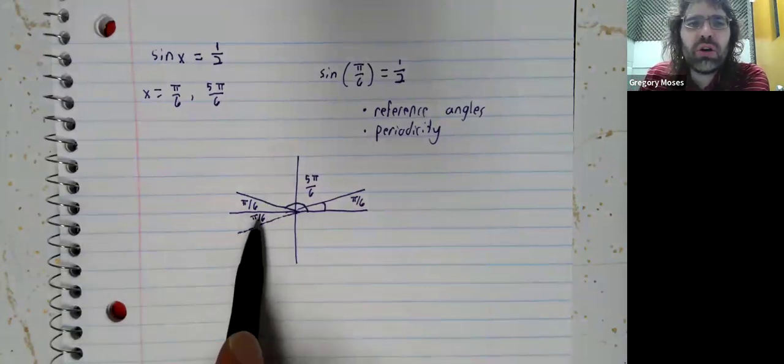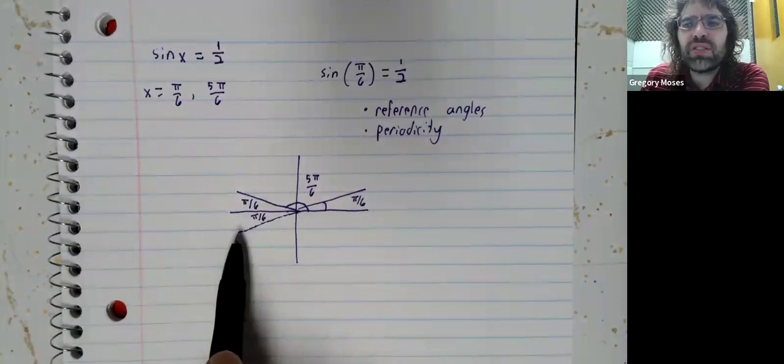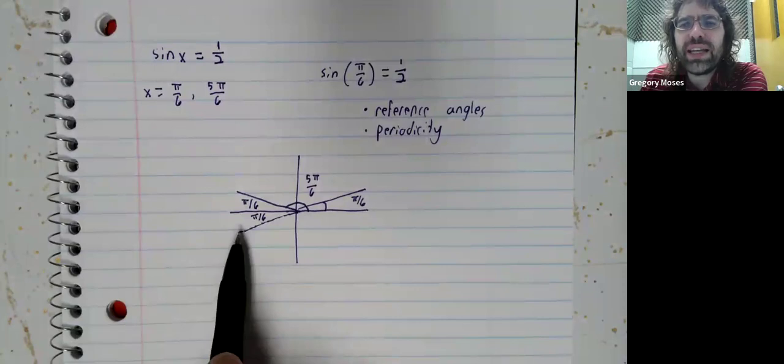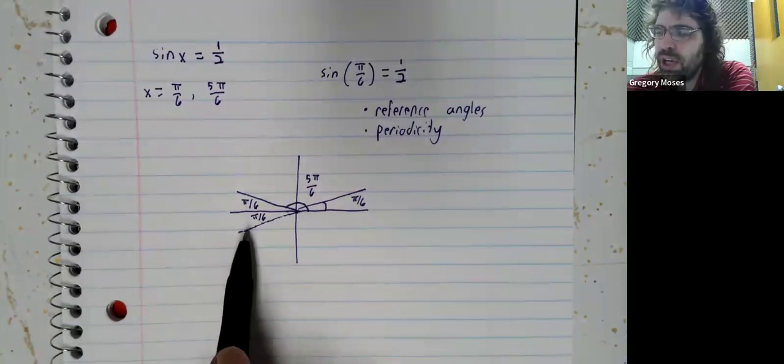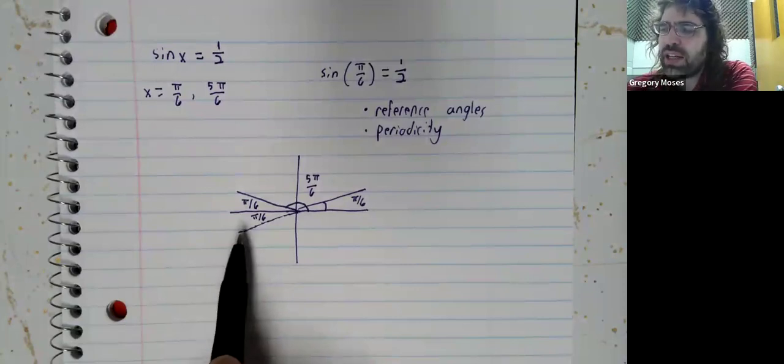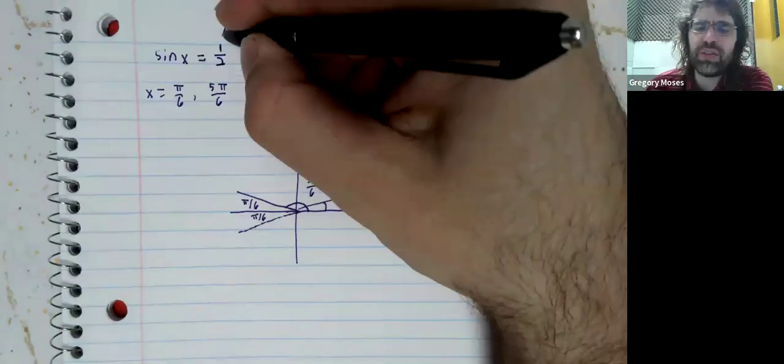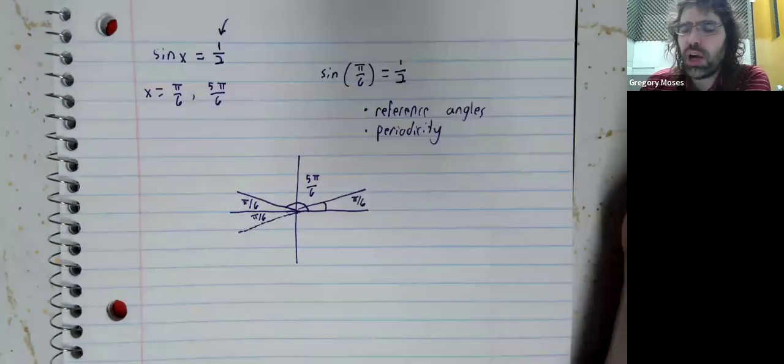But this is in the third quadrant, and the sine of any angle in the third quadrant is negative. So, because we want the sine to be positive one-half, this is a no-go.